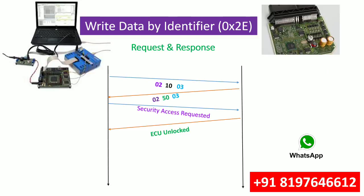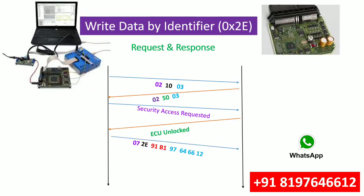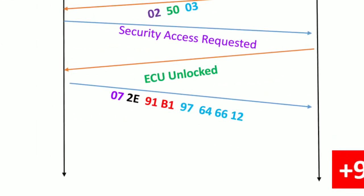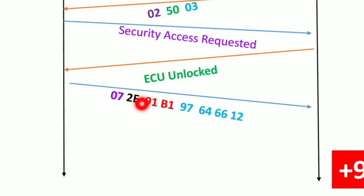In Security Access, we need to send a seed, and once we get the seed we generate a key. Now we are writing data. 0x07 is the PCI length — we are writing 7 bytes of data — then 0x2E is the service ID for Write Data by Identifier, and 0x91B1 is the DID given by the car manufacturer.